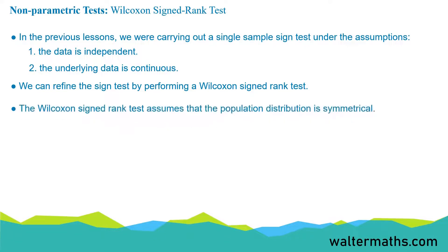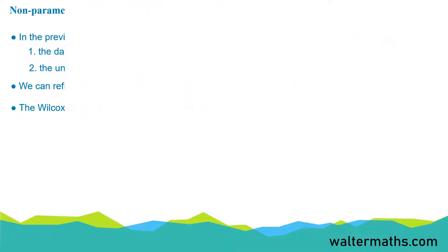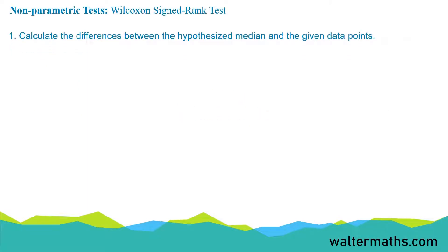The Wilcoxon signed rank test assumes that the population distribution is symmetrical. So this is important for you to note. Let's talk about how we carry out the test. Number one, we calculate the differences between the median and the data points given.